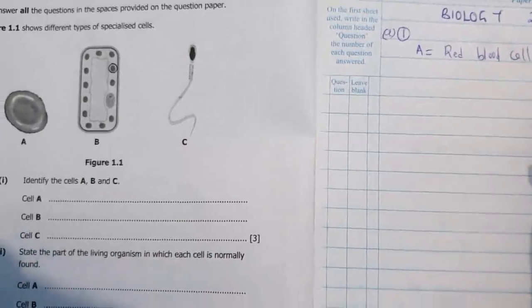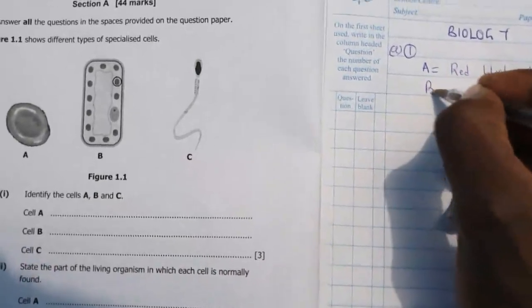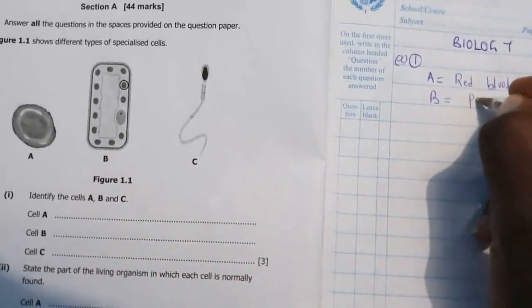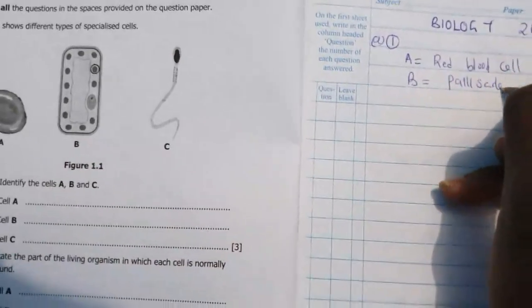Then cell B, look at cell B. This is a plant cell, but it's a palisade cell, a palisade cell.